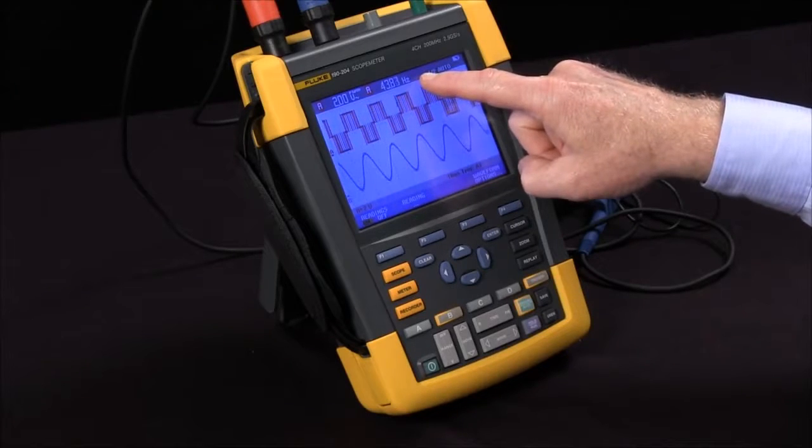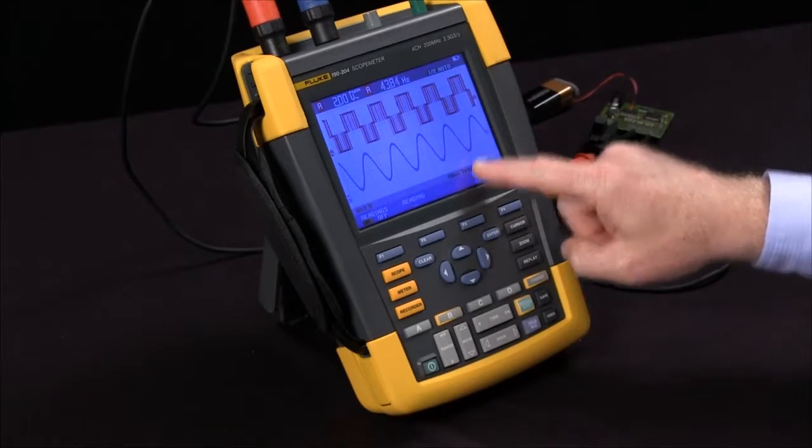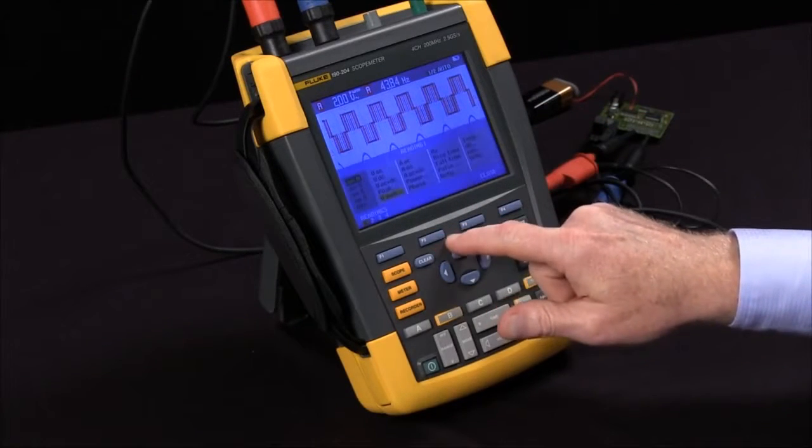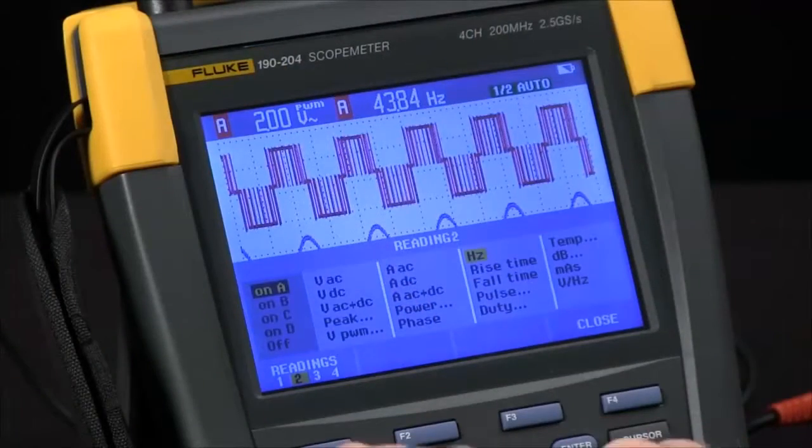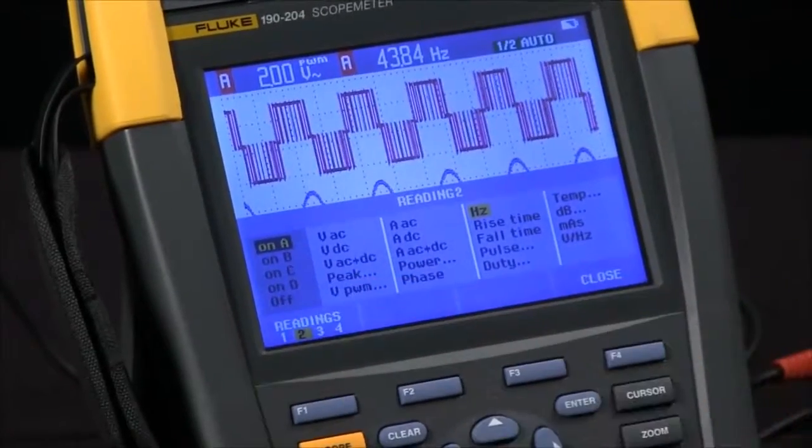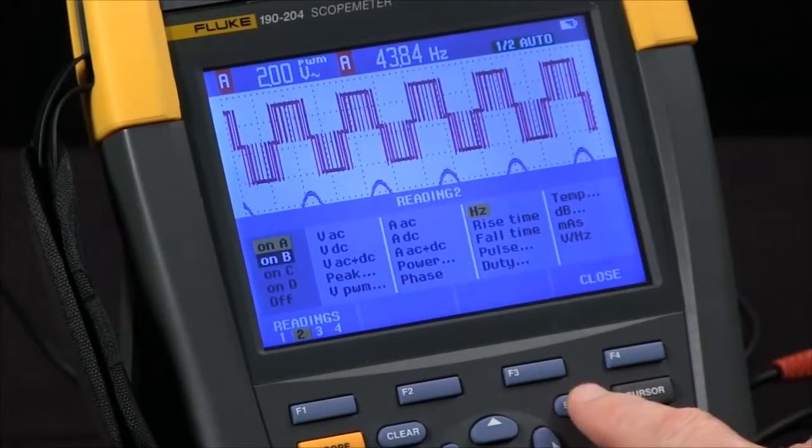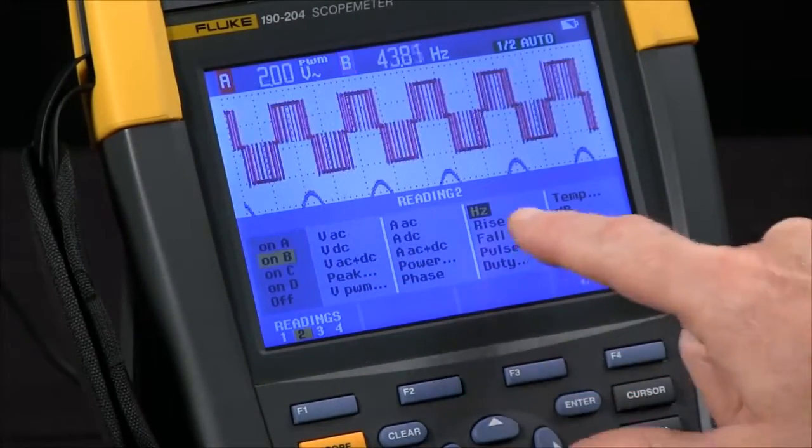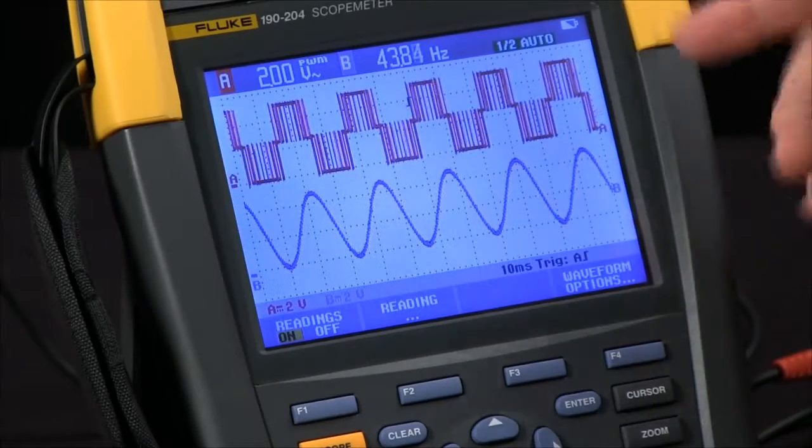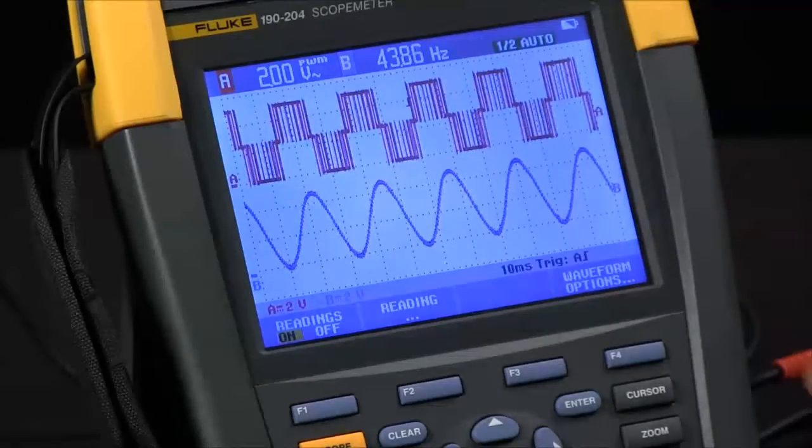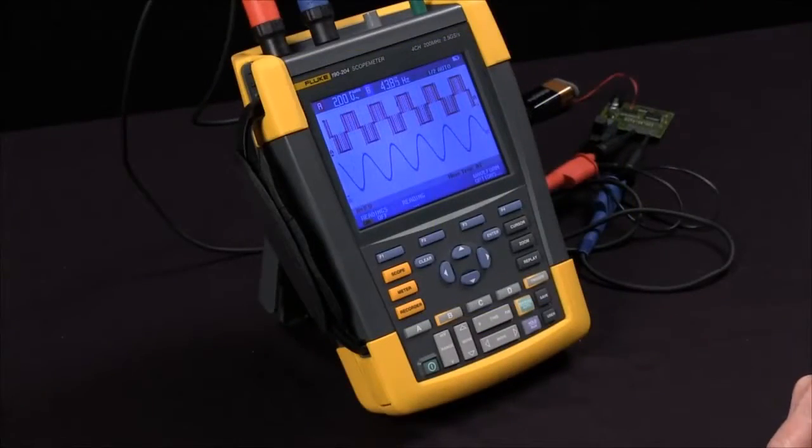I want to make the second reading for channel B. Go to readings again, press F1 to change to reading 2, bring channel A down to channel B, enter, and we'll leave it at frequency. We close that, now we have a reading for A, a reading for B, and that's some basic setup for the Fluke scope meter.